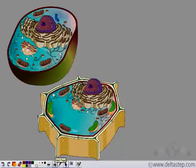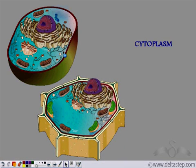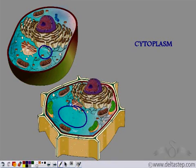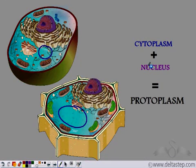So what did we study today? We studied about the cell fluid which is known as the cytoplasm. The cytoplasm is present in both the animal cell and the plant cell. We also discussed about the nucleus, which is the controlling unit of the cell. The nucleus had nucleoplasm. So cytoplasm and nucleus together are collectively known as protoplasm, which is the fluid content of the entire cell.